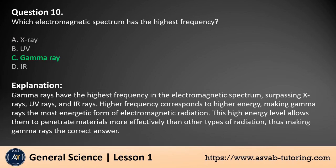The answer is c. Gamma rays have the highest frequency in the electromagnetic spectrum, surpassing X-rays, UV rays, and IR rays. Higher frequency corresponds to higher energy, making gamma rays the most energetic form of electromagnetic radiation. This high energy level allows them to penetrate materials more effectively than other types of radiation, thus making gamma rays the correct answer.